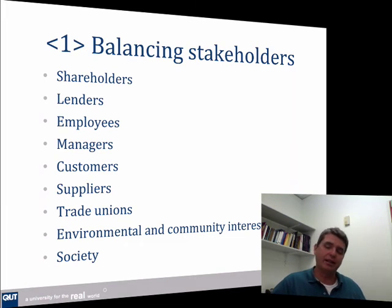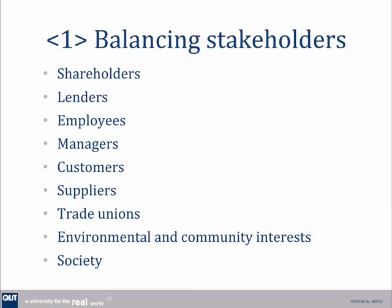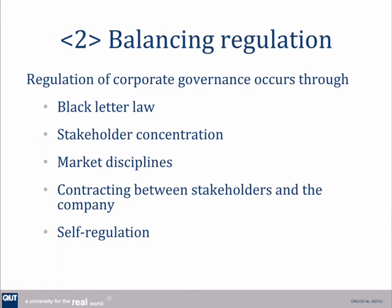In terms of balancing stakeholders, there's a whole list of various stakeholders, which we'll cover in around Lecture 5 when we talk about CSR and its role in corporate governance. We also need to balance regulation. We have different ways of regulating: black-letter law, regulation through various stakeholder and shareholder concentration mechanisms, market discipline as a form of regulation where people can buy and sell shares, contracts between various parties, and self-regulation where people adopt codes of conduct, as well as industry codes.